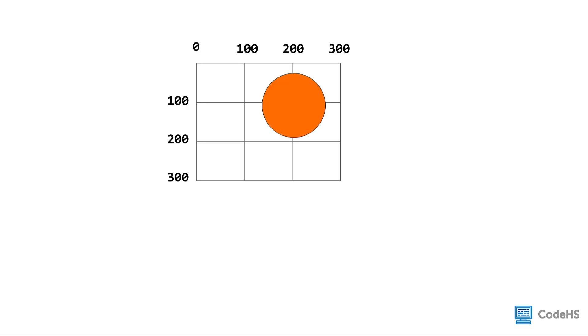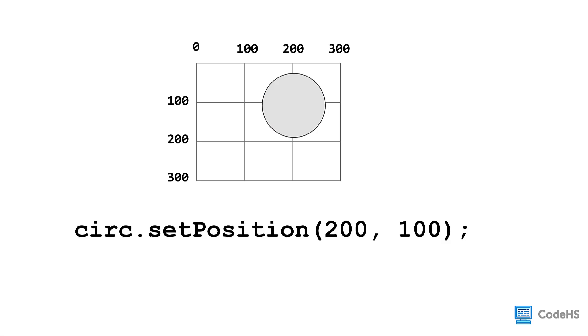Next, we need to customize the circle. Two ways that we can customize an object is by changing its position and its color. To change its position, we write the name of the variable storing the shape, dot setPosition, followed by parentheses. Between the parentheses, we write the x and y-coordinate where the center of the circle should be anchored to the canvas.